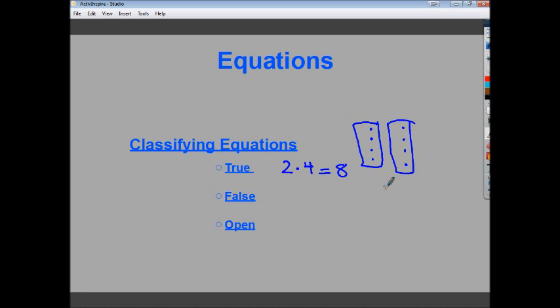A false statement is one, obviously, that isn't true. 4 plus 6 is equal to 9. Well, no, 4 plus 5 is 9. So this is a false statement.